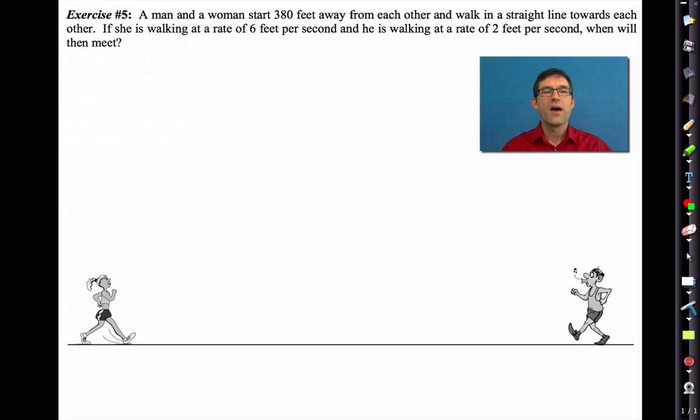A man and a woman start 380 feet away from each other and walk in a straight line towards each other. If she is walking at a rate of 6 feet per second and he is walking at a rate of 2 feet per second, when will they meet? All right. Well, there are lots and lots of different ways of doing this problem. Okay. I'd like you to pause the video and see if you can come up with one method. I don't want you to worry about whether you do it using something that like is a system of equations. That's the way I'm going to do it eventually, right? But I just want you to figure out when they're going to meet. Okay.